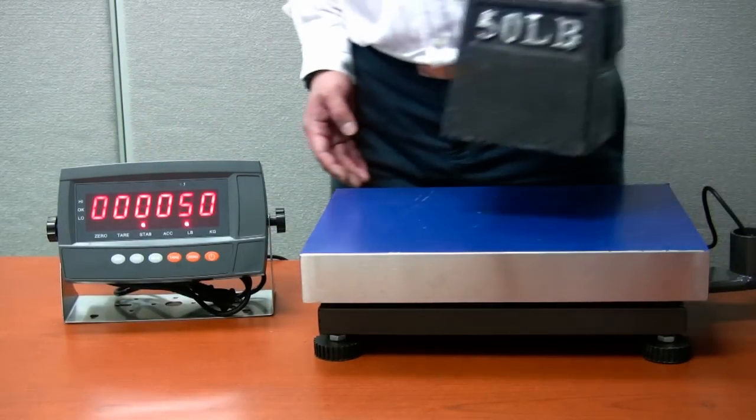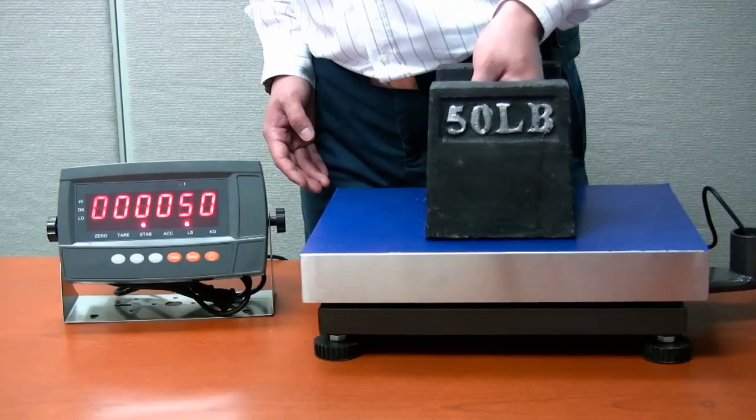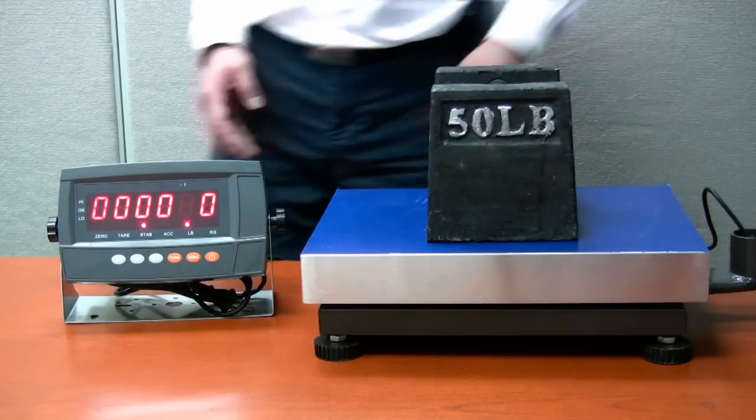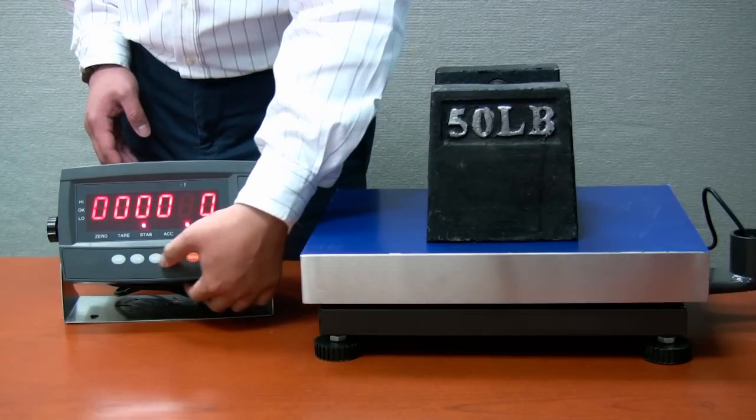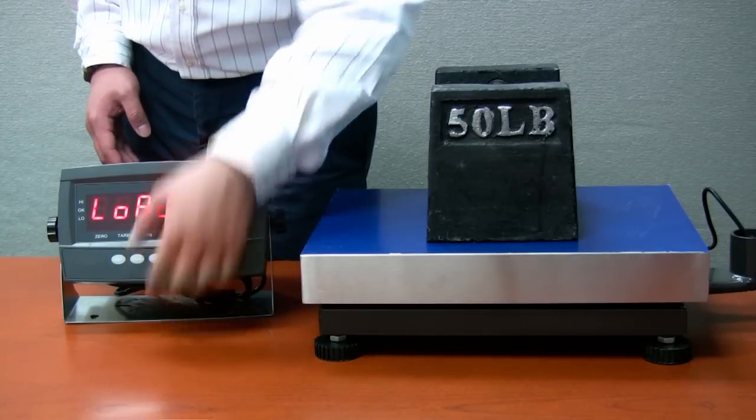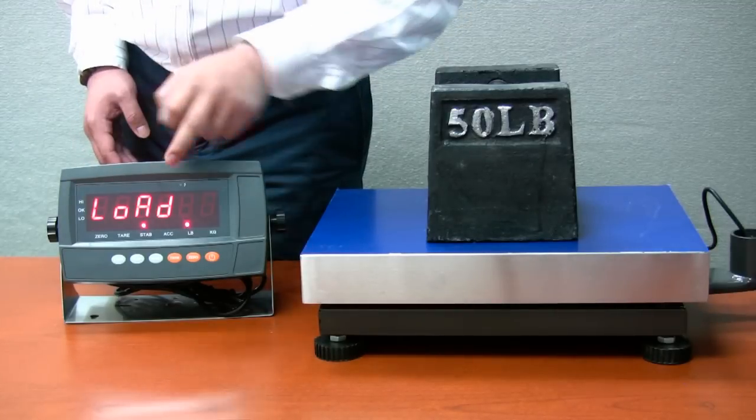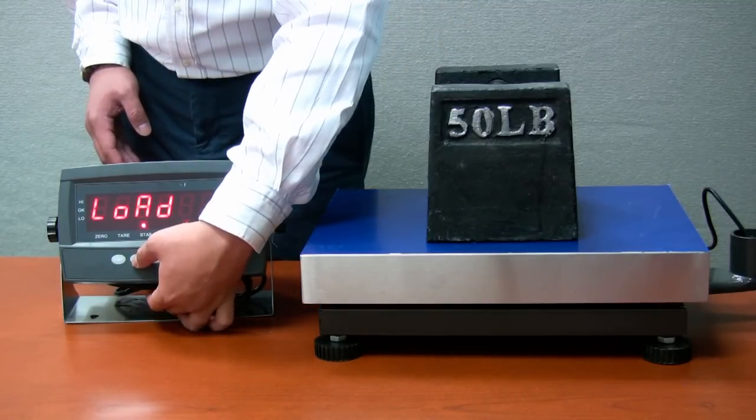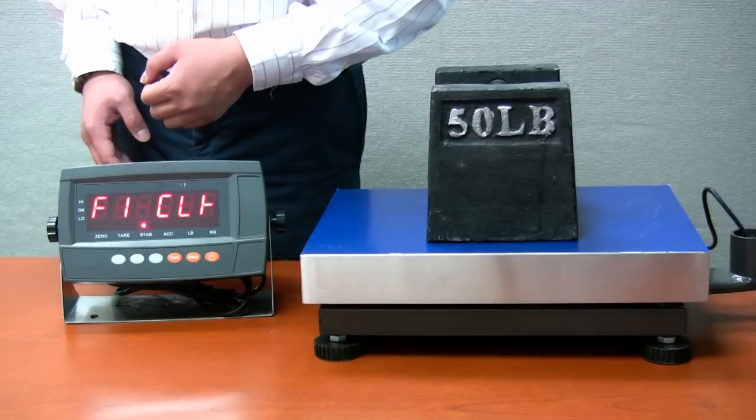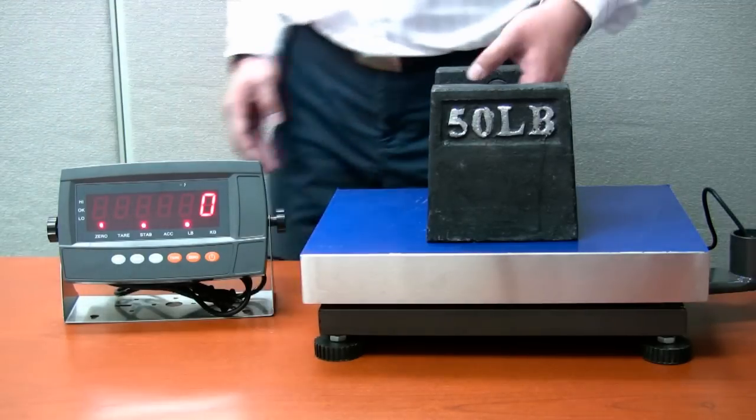Place the calibration weight on the scale platform. Press function key and the indicator will show load. Check the indicator's staple light, make sure it is on, press function key. The calibration is completed.